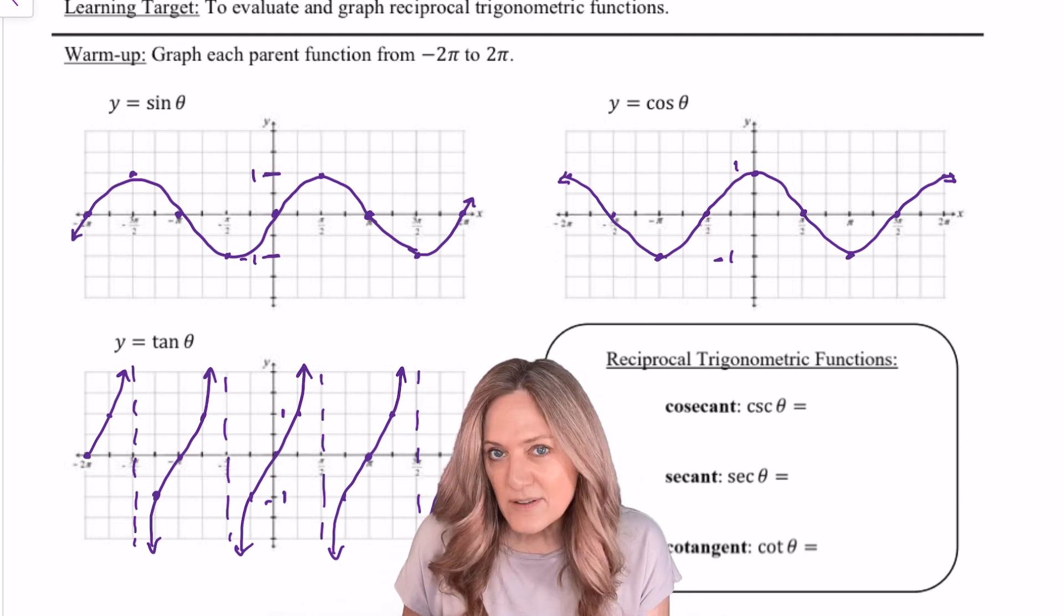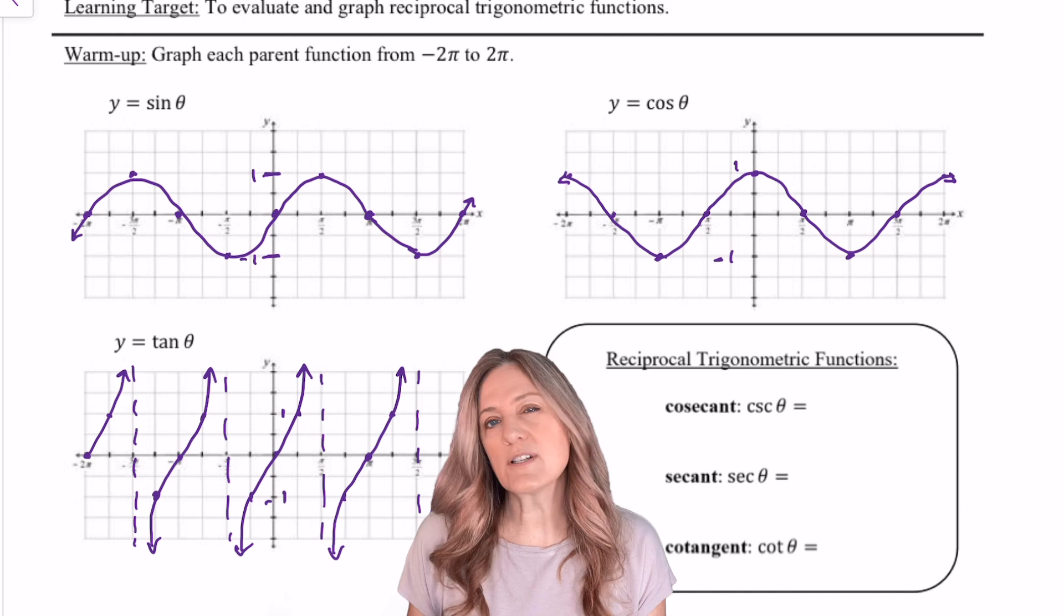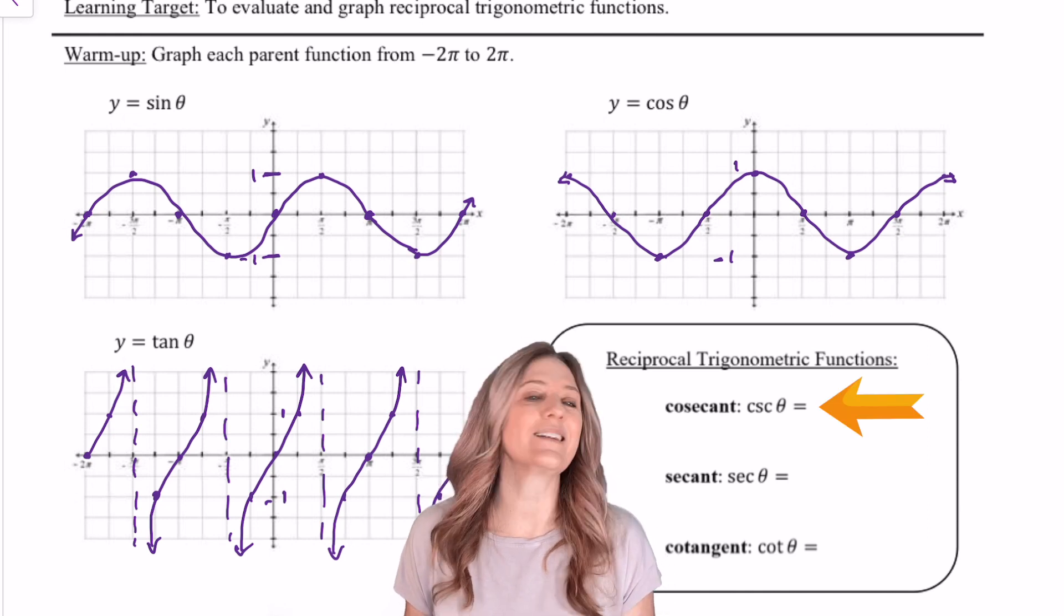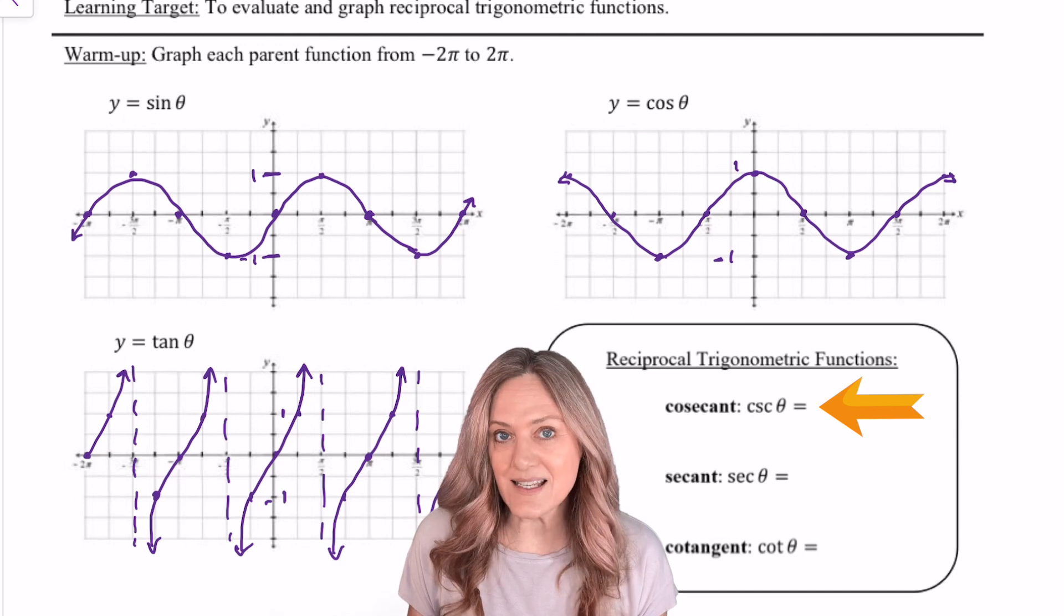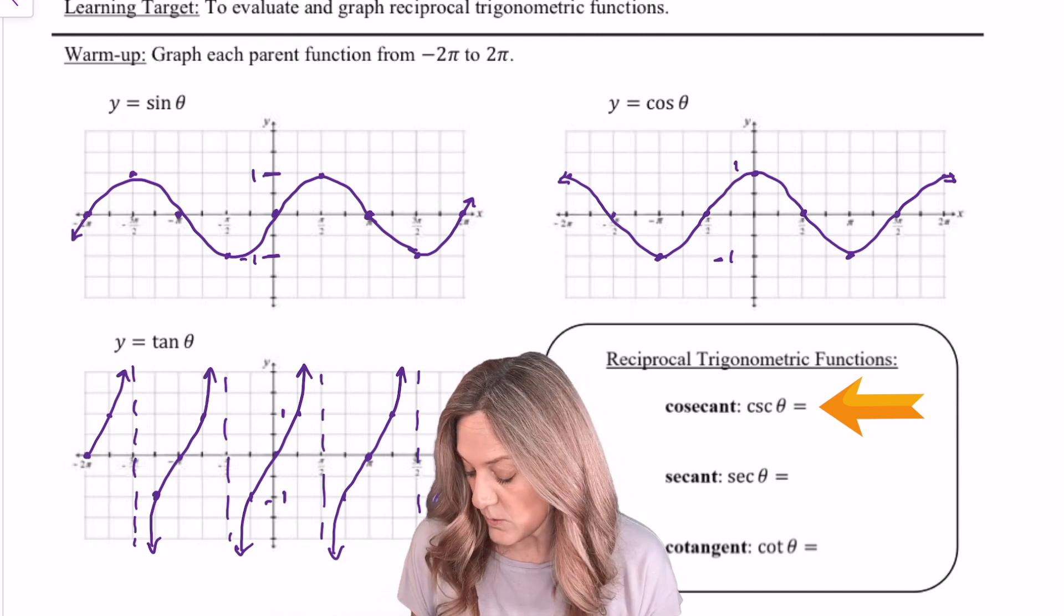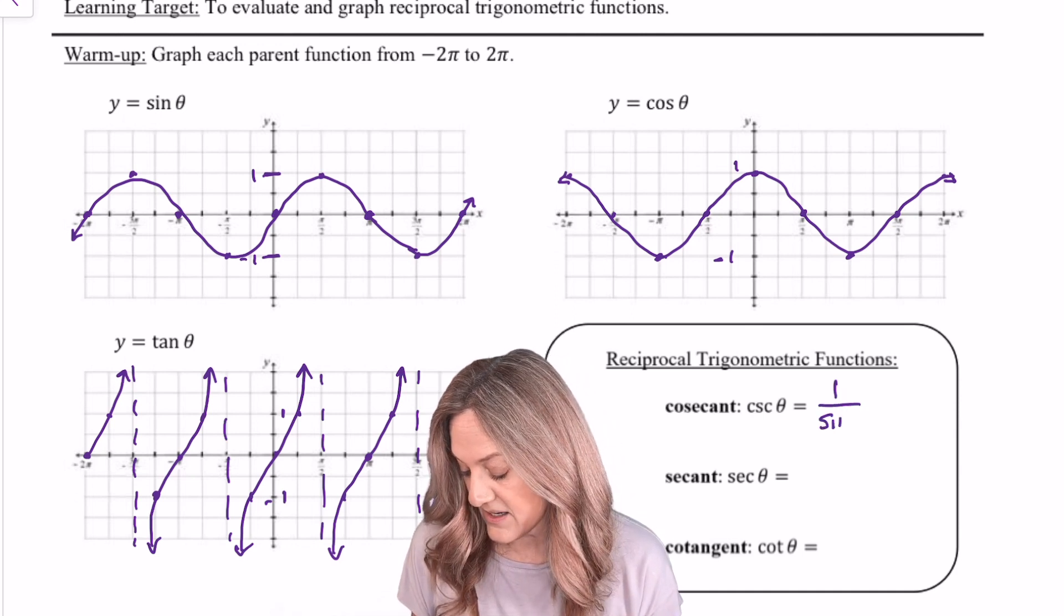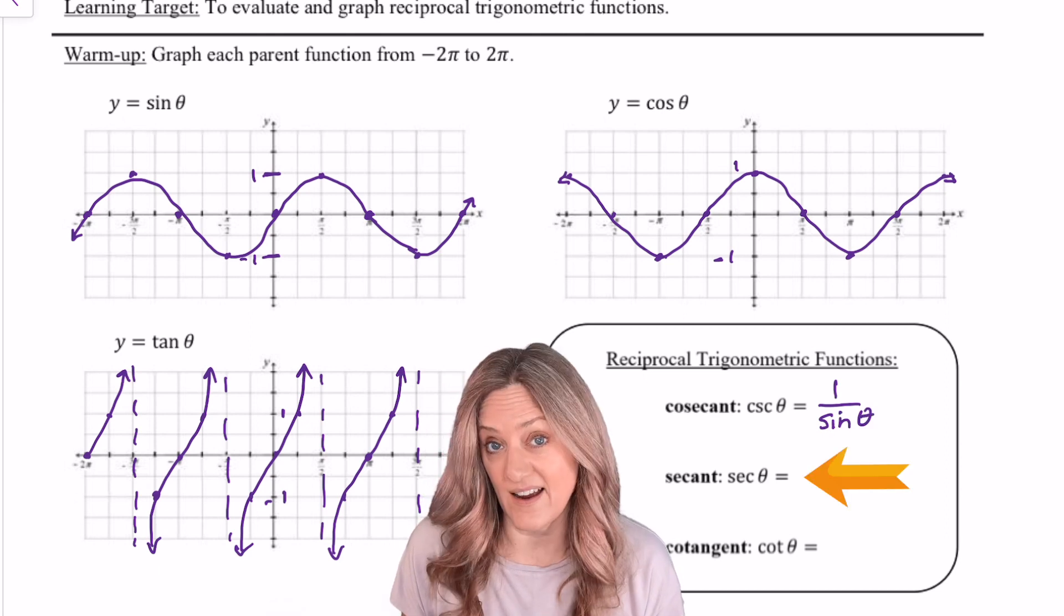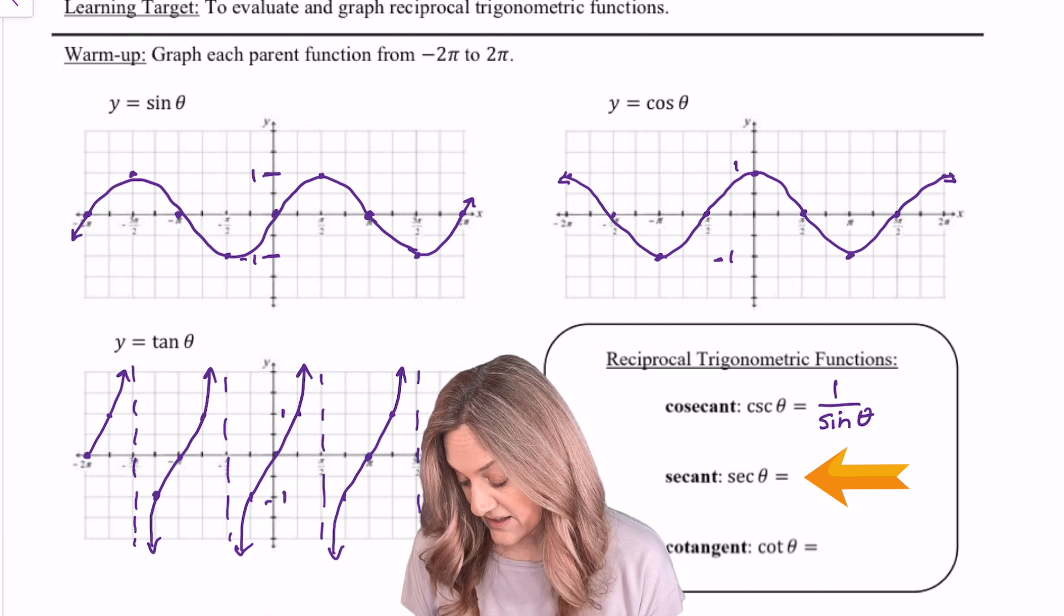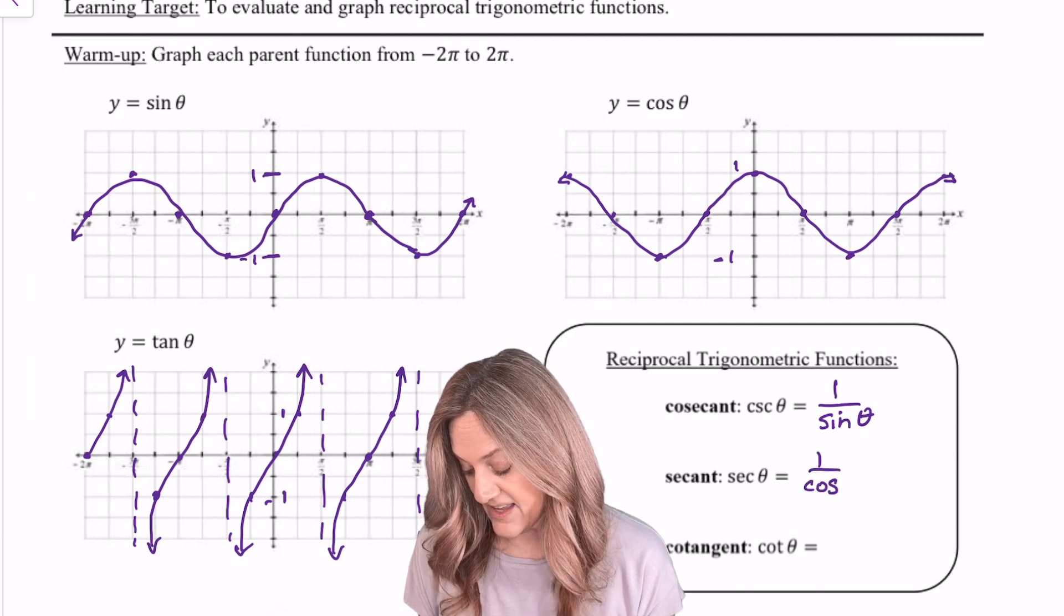Now let's talk about those reciprocal trigonometric functions. We first see cosecant. Cosecant is the reciprocal of sine. So when I see csc θ, I want to write 1 divided by sin θ. Secant is the reciprocal of cosine. So when we see sec θ, it's 1 divided by cos θ.